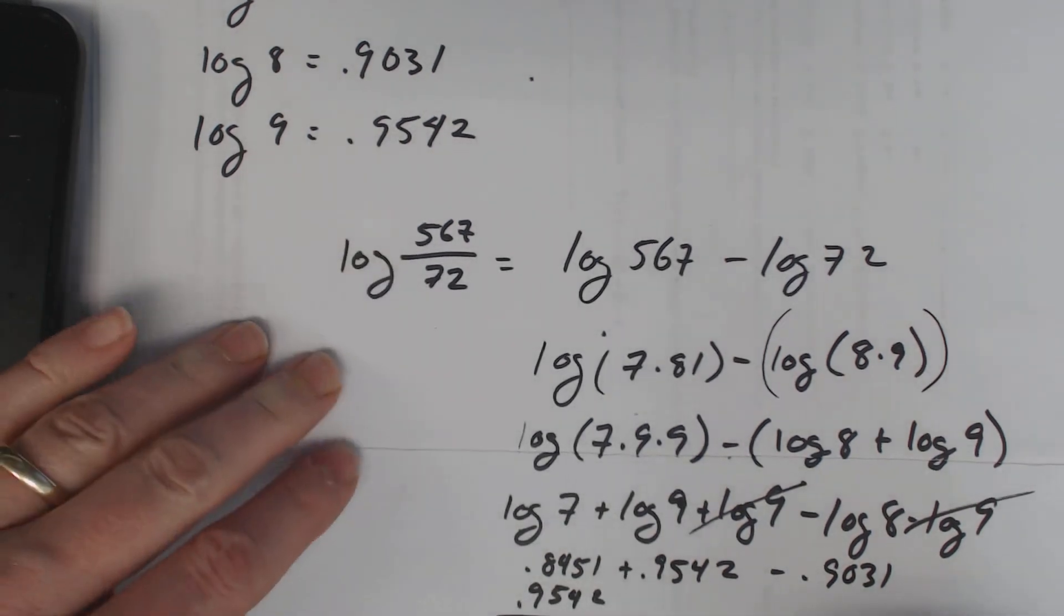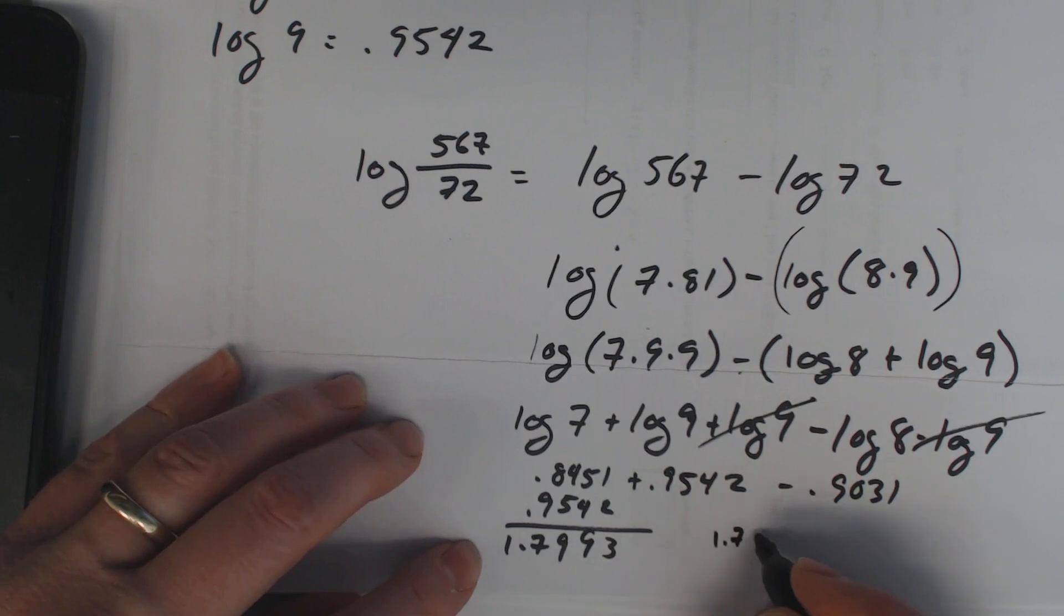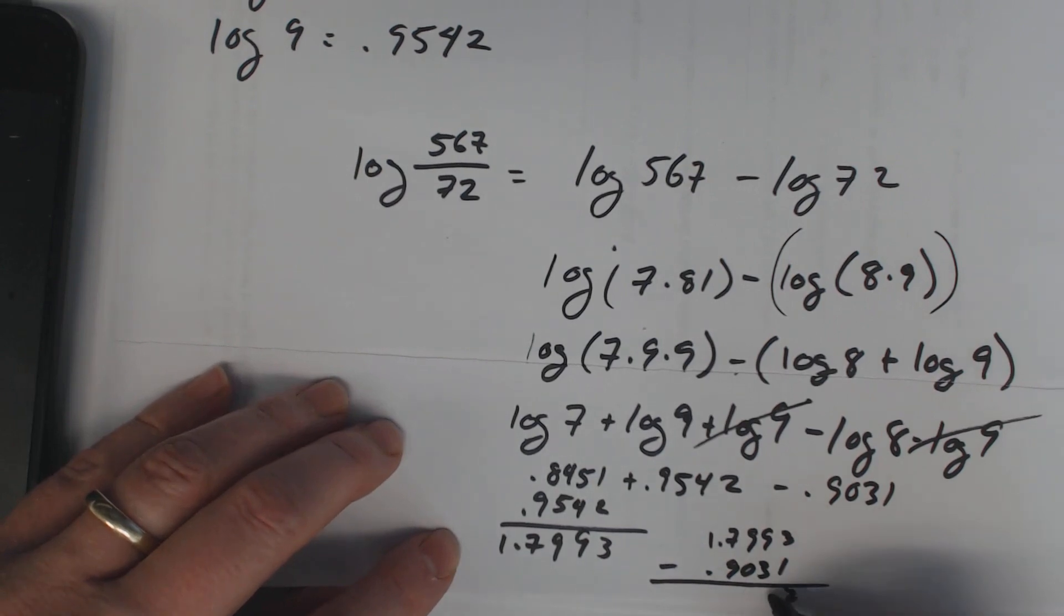And then we're supposed to subtract away the 0.9031. That gives us 0.8962.